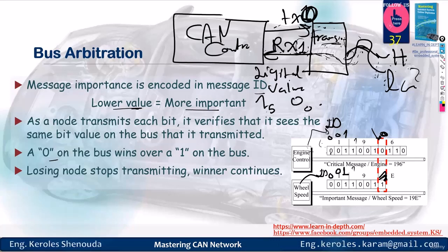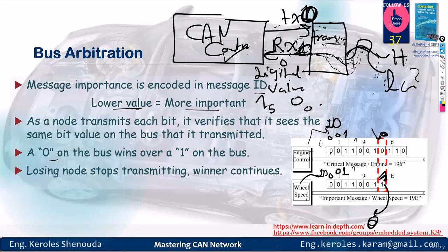When the engine control and the wheel speed reached a certain point, the first placed a zero and the second placed a one. The engine placed the zero and CAN high and CAN low were formed to represent zero, and the transceiver returned that it's a zero — so it's the winner of the bus. Unlike the wheel speed: when the transceiver wrote a one on the bus and converted it back to RX, it found it not as one but as zero. So it knew it was the loser — there was someone else on the bus with higher priority. It will wait until the engine control finishes and gives the end of frame, then send again.